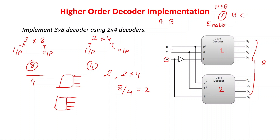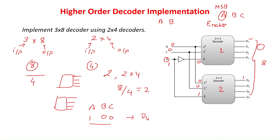Only one output should be high for a given combination. B and C are the two inputs for both 2x4 decoders, and these two lines are common to both. For example, take the combination A=1, B=0, C=0. When B and C are 0,0, D0 of the first decoder would be high and D4 of the second decoder would be high. But only one decoder should be enabled at a time, decided by A. Since A=1, the enable input is 0 for the first decoder and 1 for the second decoder. The second decoder is enabled, and with inputs 0,0, D4 will be high. The decimal representation of binary 1,0,0 is 4, so D4 is correctly high.